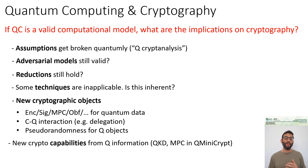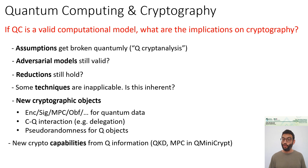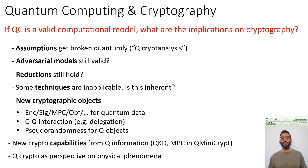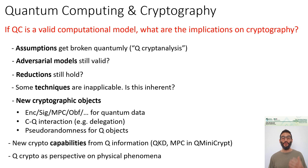Another class of applications involves constructing new cryptographic capabilities from quantum information — things that are classically impossible but could potentially be quantumly possible. For example, information-theoretically secure quantum key distribution. Or settings where the cryptographic assumption required to implement a primitive using quantum communication could be weaker than what is required in the classical setting.